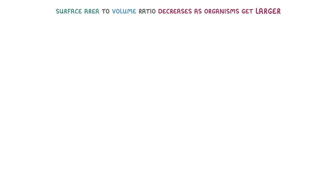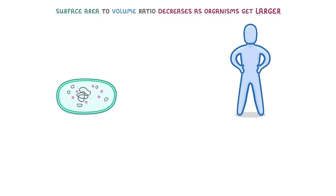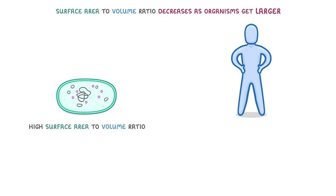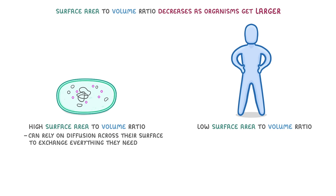So now that you understand why the surface area to volume ratio decreases as organisms get larger, let's apply that knowledge to bacteria and humans. Because bacteria are tiny, they have a really high surface area to volume ratio, and this means that they can rely on diffusion across their surface to exchange everything that they need. On the other hand, because humans are so big, we have a low surface area to volume ratio, which means that we can't rely on diffusion for all of our needs.